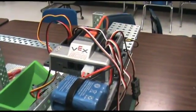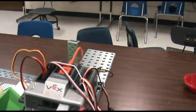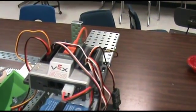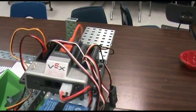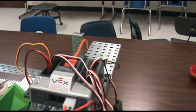The parts of the marble sorter are as follows. This is the VEX Robotics Cortex. This is basically the small miniature brain or computer of the robot.